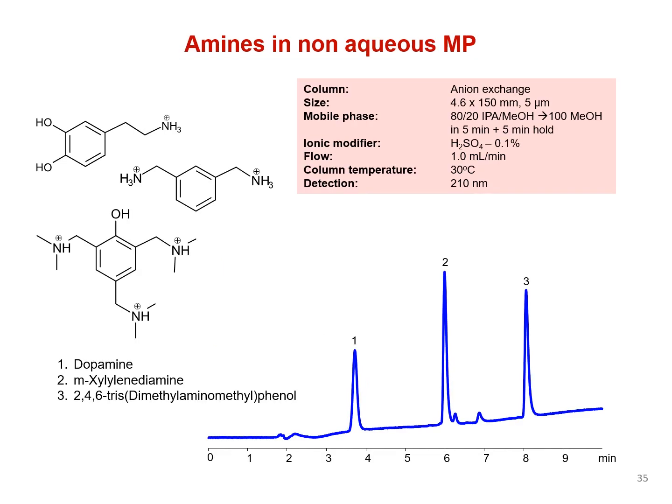Here we employ a gradient mobile phase that starts with the majority of the less polar IPA and shifts to a completely methanol-based mobile phase. This generates BIST separation and retention of these differently charged amines but ensures that the retention occurs in a reasonable time.